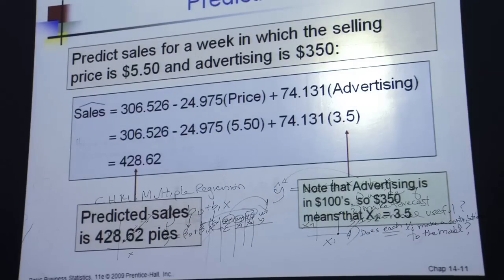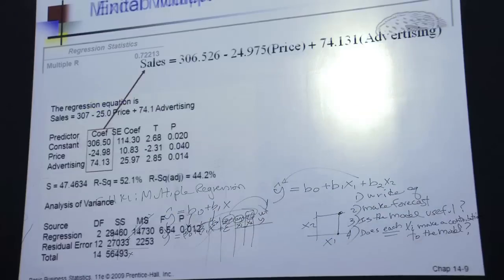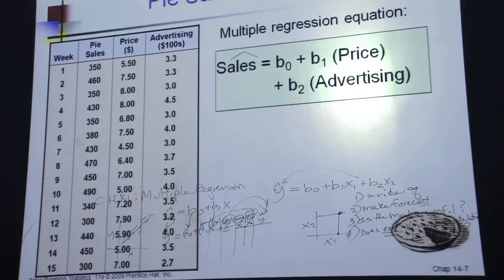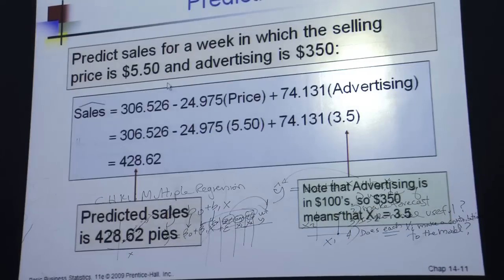Here's the second objective that I mentioned to you, to make a specific prediction. Make-believe the advertising, the price is $5.50. The advertising is $3.50. You plug it in and you get your answer. Now notice that you're plugging in for 3.5 instead of 350 because I guess all the original, the original problem, the numbers over here were in hundreds of dollars. You see the advertising, so it was 3.3 meaning $330. This is $300, et cetera. So that's just to be, you've got to be careful about the units to make the simple forecast.